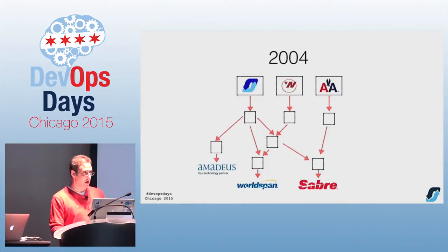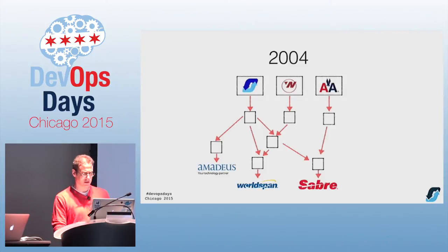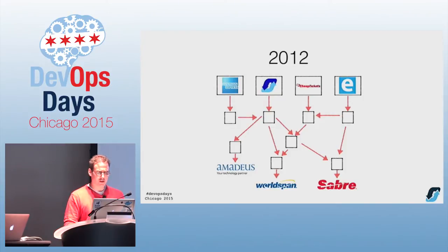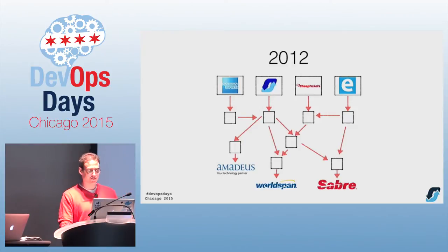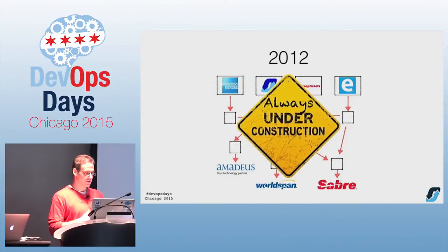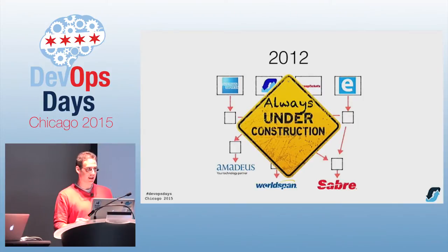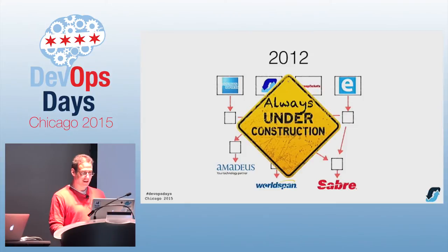That worked fine for a while. We hooked up to other backends. American eventually connected to Sabre themselves. Northwest got bought by another carrier. Orbitz acquired other brands. American Express needed a booking engine, so we provided that. There's a lot more history — it's a 15-year-old company. Your site is never really done; everything is always going to be evolving. This idea that one day everything will be using one thing and it'll be blissful nirvana? Never going to happen.